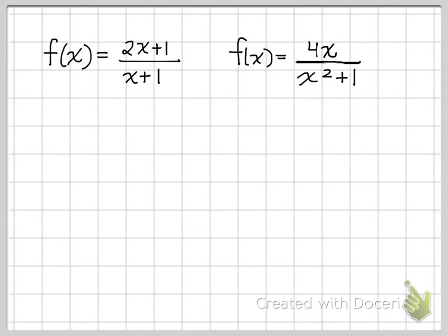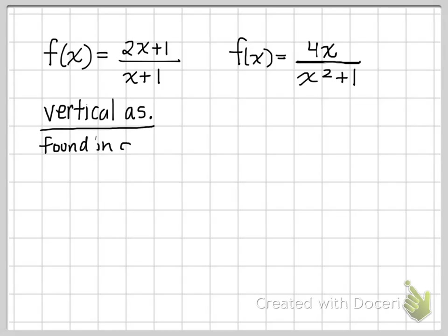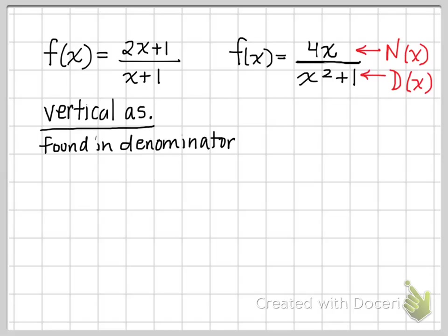Looking at the first function, f(x) = (2x + 1)/(x + 1), I want to find the vertical asymptote. It's common to refer to the numerator as N(x) and the denominator as D(x). The vertical asymptote is found using the denominator — you take the denominator, set it equal to zero, and solve for x. That gives you your vertical asymptote.